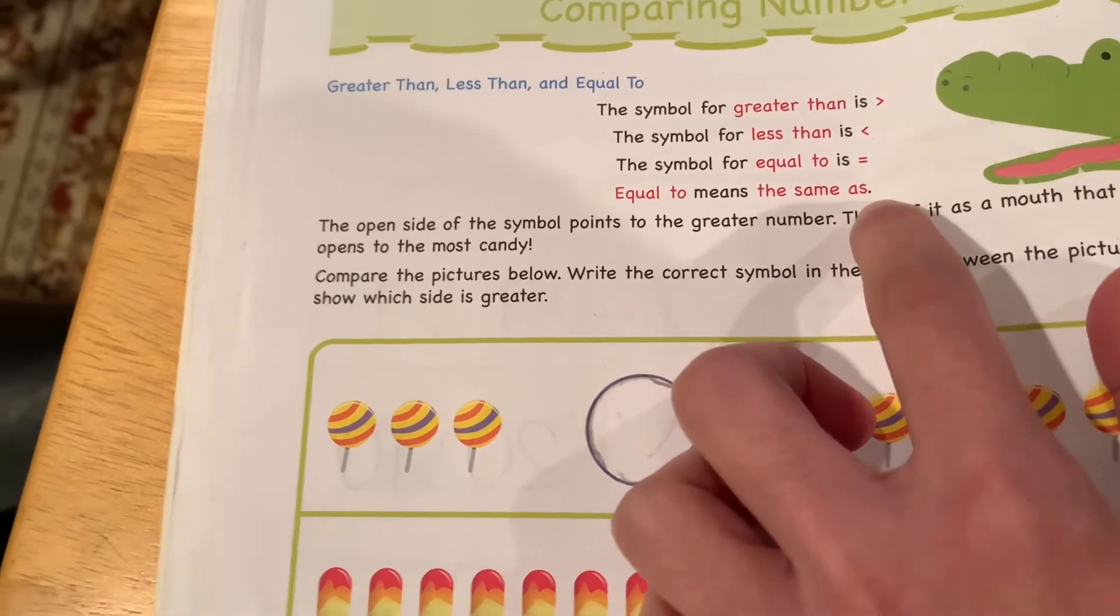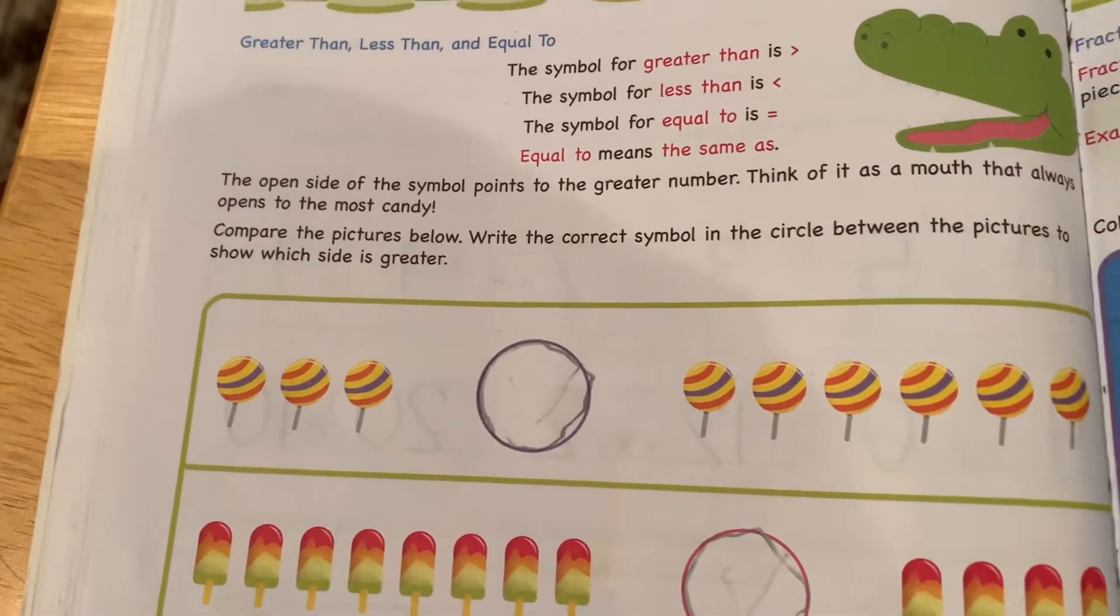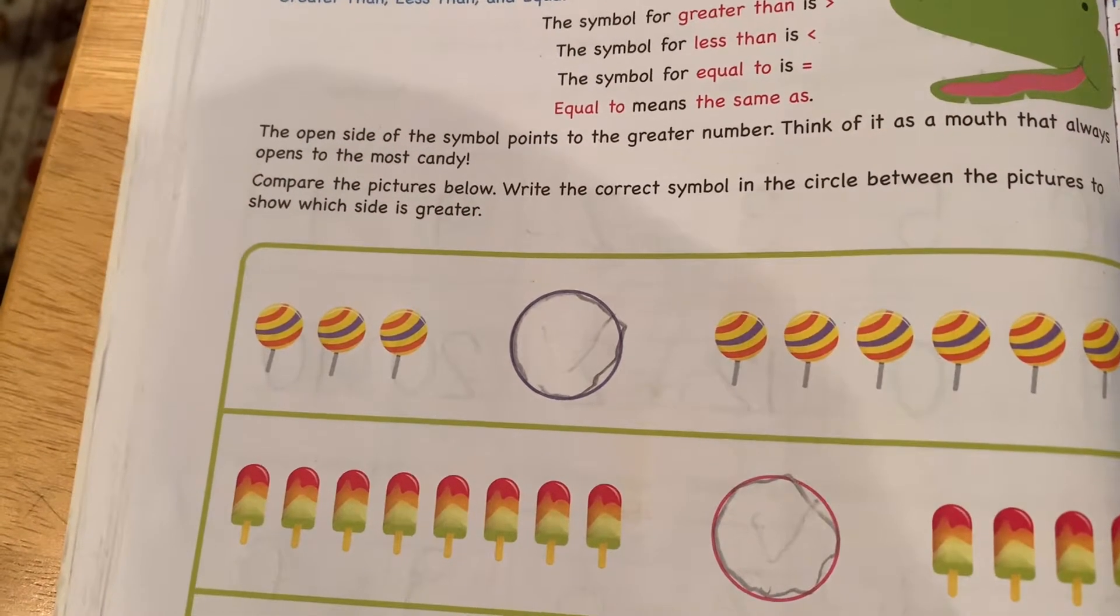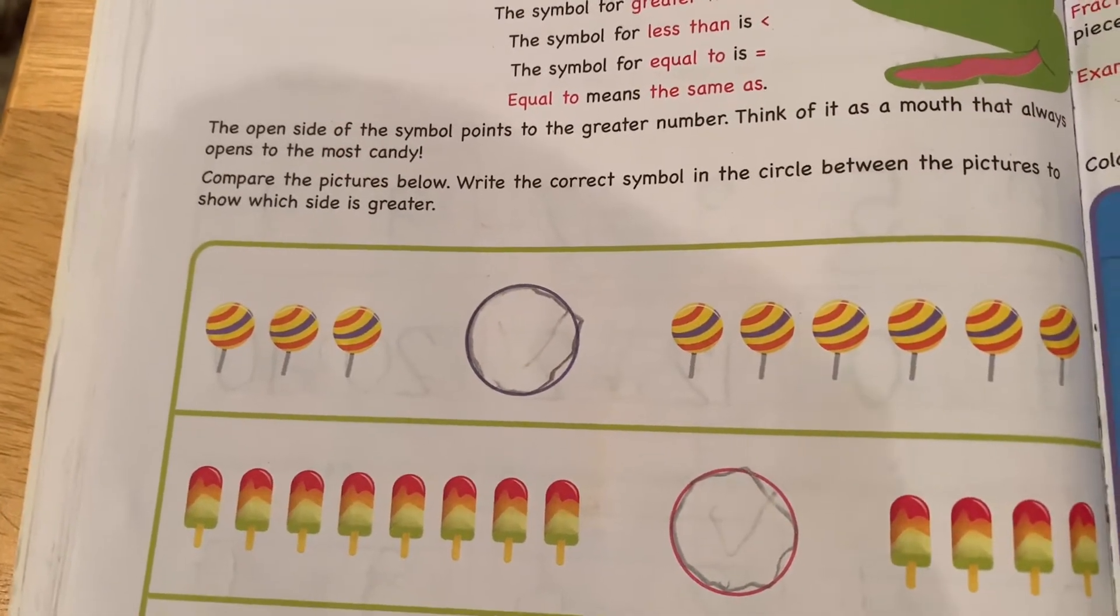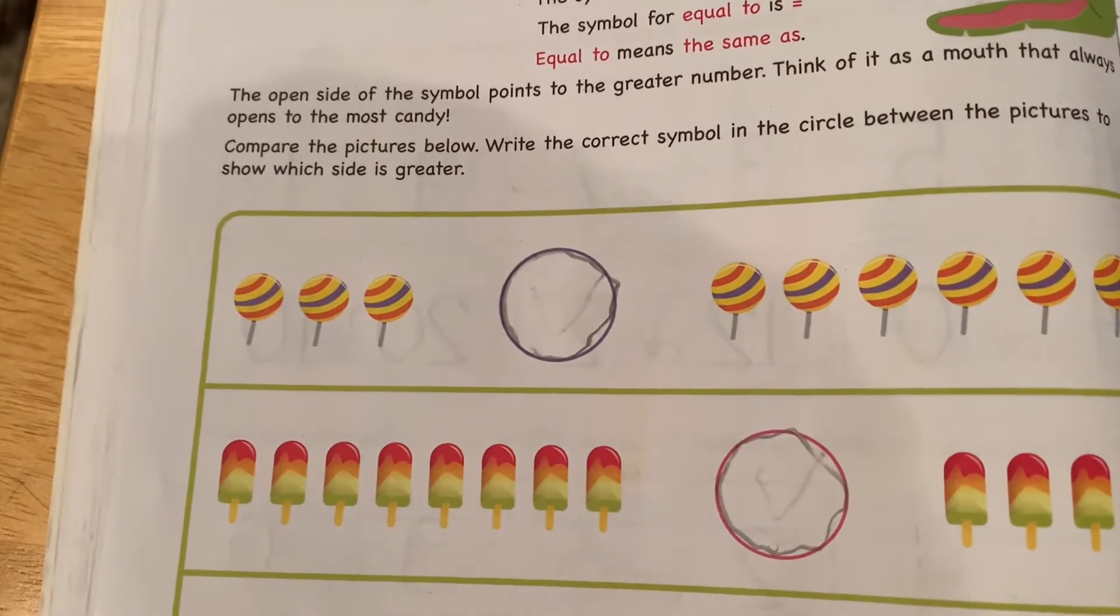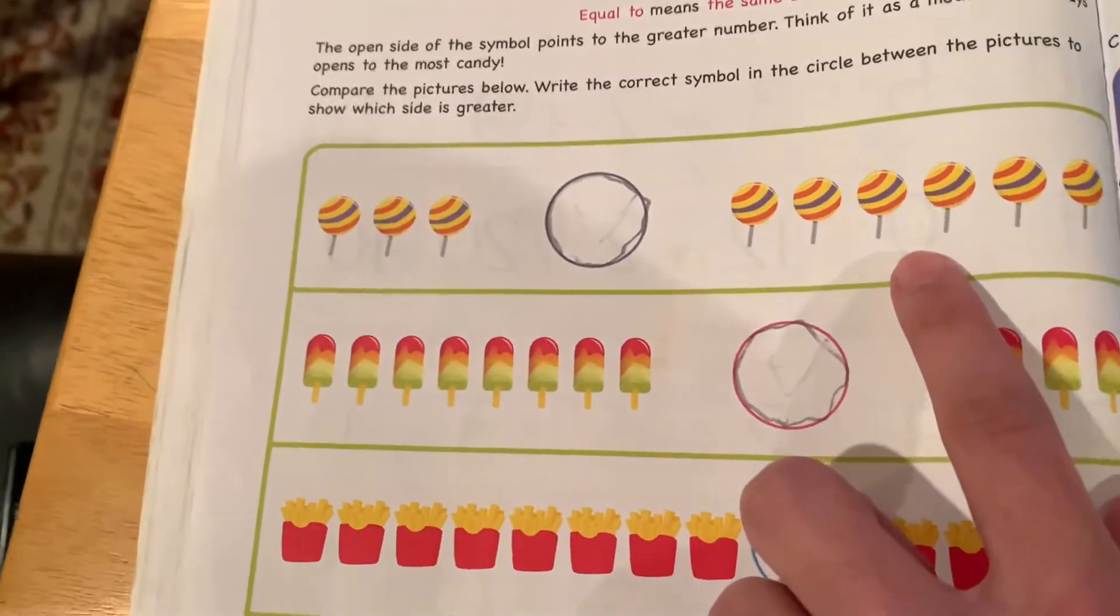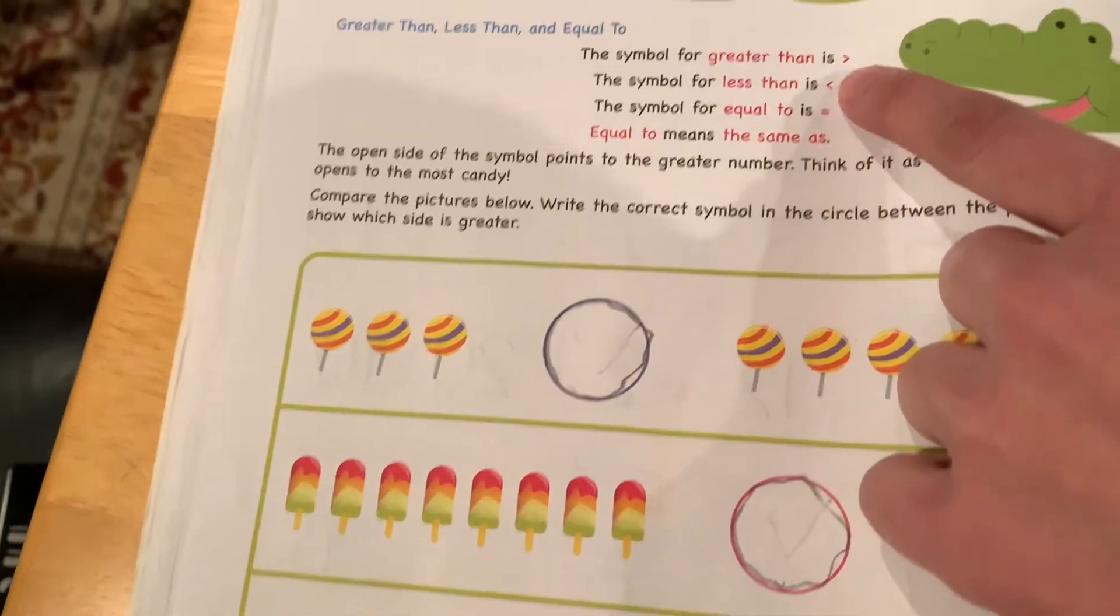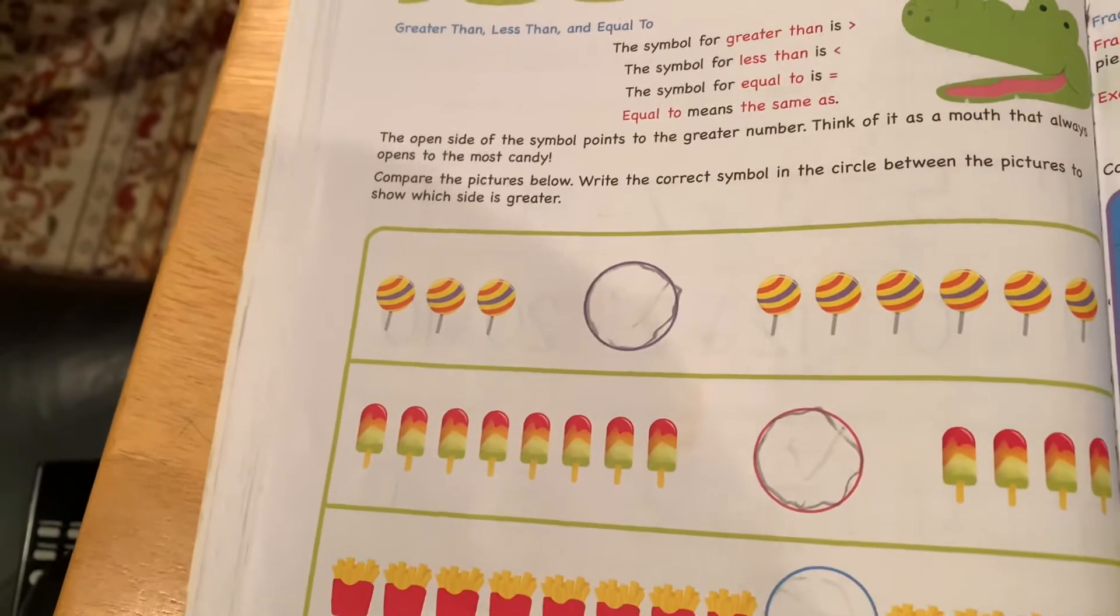Equal to means the same as. The open side of the symbol points to the greater number. Think of it as a mouth that always opens to the most candy. Compare the pictures below. Write the correct symbol in the circle between the pictures to show which side is greater. Which one is greater? Three candies or six candies? Six candies. Okay. You do it like this. You put the mouth like this, with the most candy.